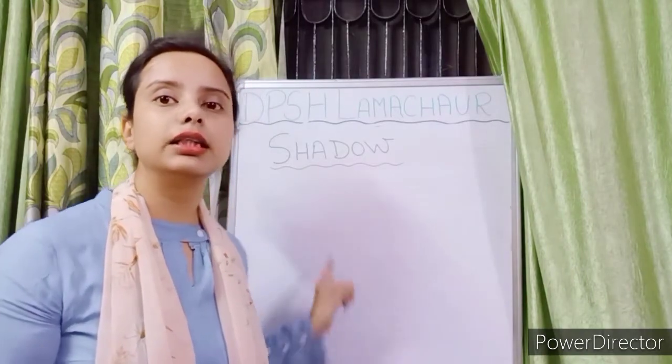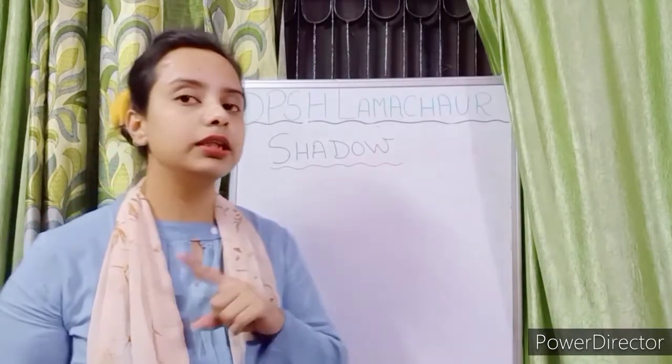Sometimes the shadow depends on the shape of the object, and from the shadow we can get an idea of the shape. But sometimes the shadow misleads us. For example, if we make a shadow of a cone, on the screen it will show the shadow of a triangle shape, not the cone shape. So sometimes the shadow misleads us.